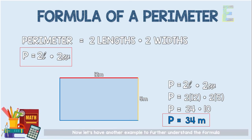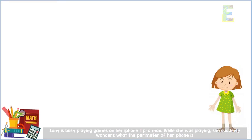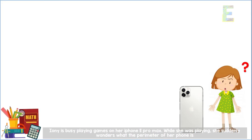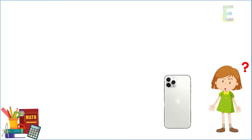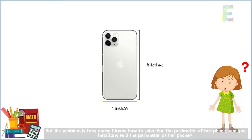Now let's have another example — a word problem — to further understand the formula. Ayuni is busy playing games on her iPhone 11 Pro Max. While she was playing, she suddenly wonders what the perimeter of her phone is. She measures the length and width of her phone. The length of her iPhone 11 Pro Max is 6 inches and the width is 3 inches. But the problem is, Ayuni doesn't know how to solve for the perimeter of her phone. Can you help Ayuni find the perimeter of her phone?